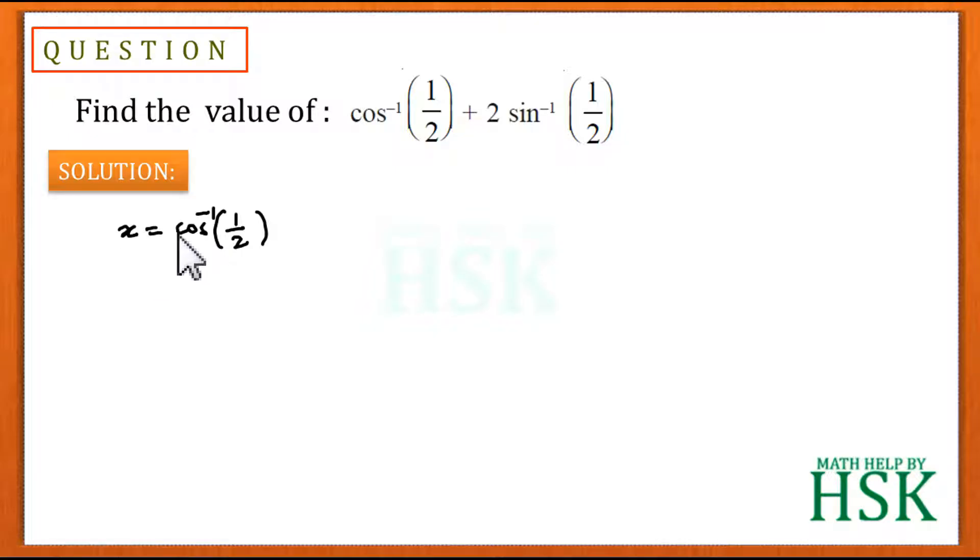Let the principal value of cos⁻¹(1/2) be equal to x, which means cos x = 1/2. Because the value is positive, we don't have to worry about the interval, so we can directly write that